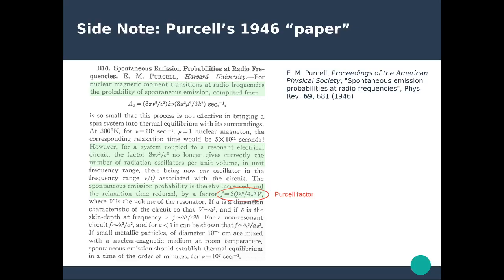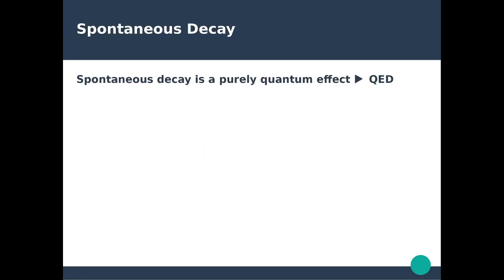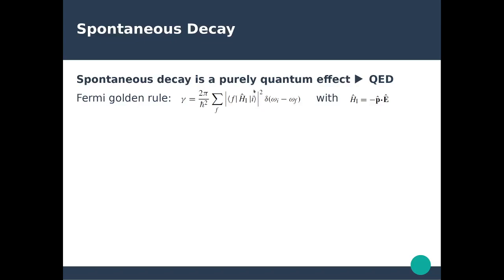We will discuss this further when discussing quantum emitters in chapter five. For now, we focus on more general aspects of spontaneous decay. Spontaneous decay is a purely quantum effect, and it requires rigorous treatment using quantum electrodynamics. The framework for that is typically Fermi's golden rule, which calculates the decay rate gamma. The interaction Hamiltonian in this case can be approximated by a dipole interaction term. Since we are dealing with fairly small objects — molecules and quantum dots — the dipole approximation is very robust. You could eventually include quadrupole interaction terms, but they are very weak.